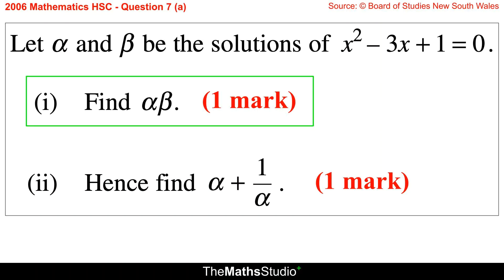Question 7, Part A. Let alpha and beta be the solutions of x squared minus 3x plus 1 equals 0. Part 1: Find alpha beta.